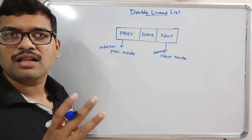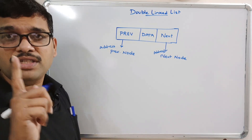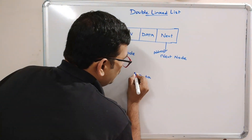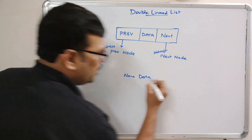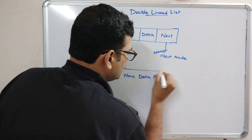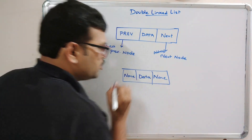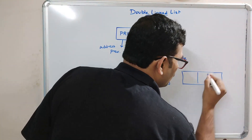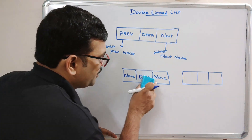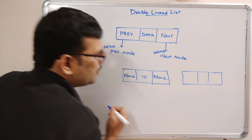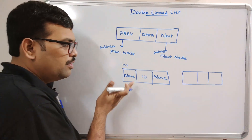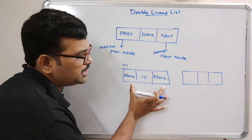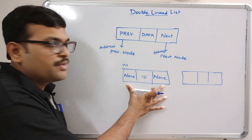We have to create a node with three variables: one for data, one for previous, and one for next. If it is the first node, there will be data and the previous is None because there is no previous node, and the next is also None. For example, if we insert a node n1 with value 10, there will be no reference to the previous or next node, so both are None.